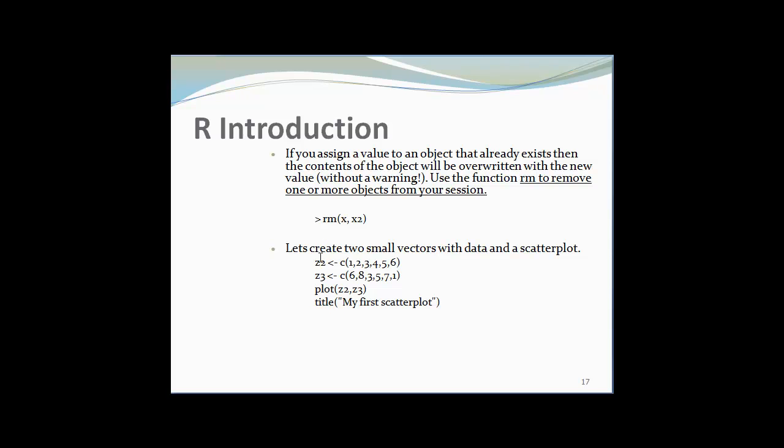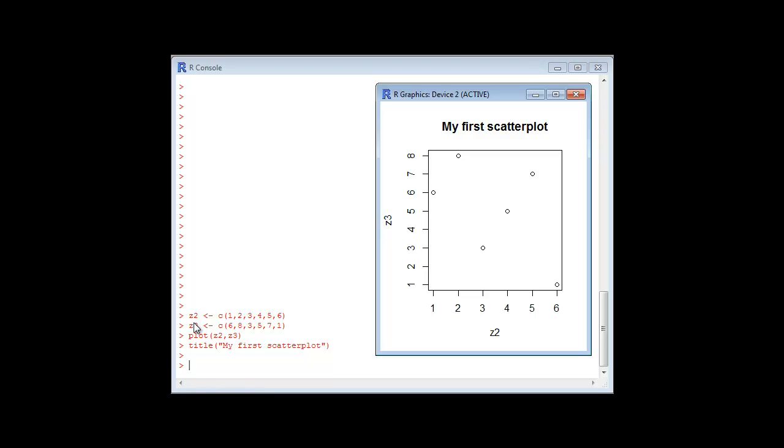Let's create two small vectors with data and a scatter plot. Suppose I am having Z2 equal to 1, 2, 3, 4, 5, 6 and Z3 equal to 6, 8, 3, 5, 7, 1. These are all elements. Plot Z2, Z3 and give the title my first scatter plot. This will plot a graph between Z2 and Z3 and give the name my first scatter plot. I have got this plot of Z2 versus Z3 by plotting Z2 on the X axis and Z3 on the Y axis, and given the name my first scatter plot to this plot.